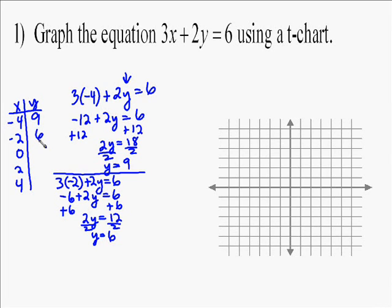0, we love. We're going to talk about this later on. Plugging in 0 is great. So you're going to have 3 times 0 plus 2y equals 6. 3 times 0 is 0. That just goes away, so you end up with 2y equals 6, which is y equals 3. So when you plug in 0 for x, you get the y value of 3.